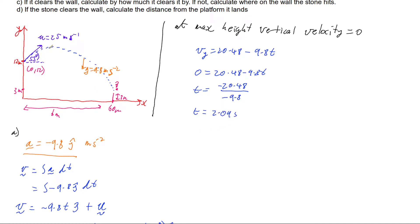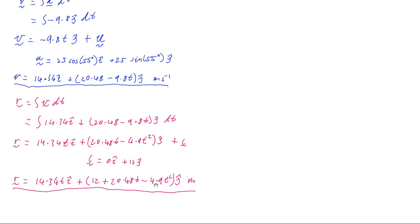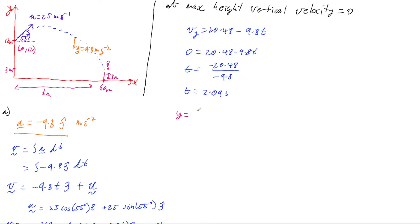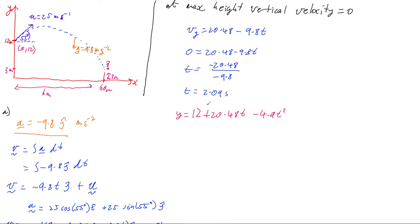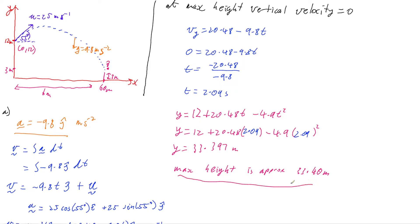Now I just need the height at that time. Our y position is given by 12 plus 20.48t minus 4.9t². Substituting in t equals 2.09 and calculating gives 33.397 meters, so the maximum height is approximately 33.40 meters. That completes part a.